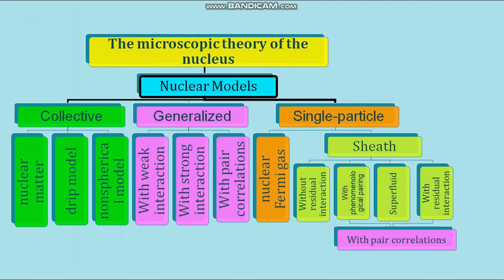The complex nature of nuclear forces and the difficulty of accurately solving the equations of motion for all nucleons — a nucleus with mass number A is a system of A bodies — have not allowed the development of a single consistent theory of the atomic nucleus. To date, approximate nuclear models are considered, in which the nucleus is replaced by a model system that describes only certain properties well and admits a more or less simple mathematical interpretation. The main ones are the drop and shell models.